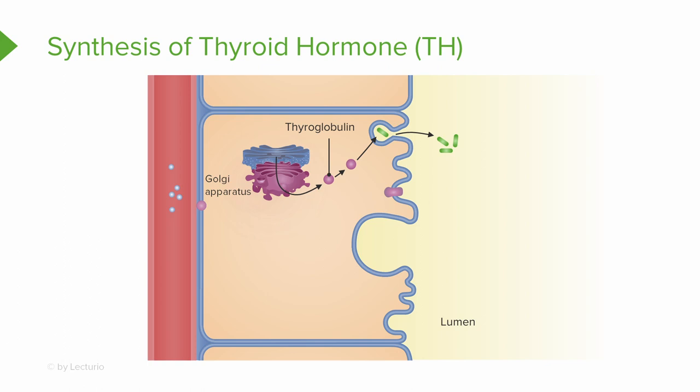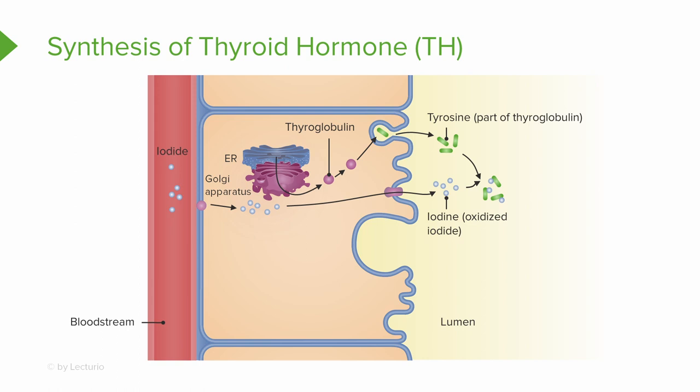The first step in synthesis is the synthesis of thyroglobulin, which is then discharged into the lumen of the follicle. In the second step, iodide is trapped — iodide ions are actively taken into the cell and released into the lumen. In the third step, iodide is oxidized by removal of electrons, converting it to iodine.